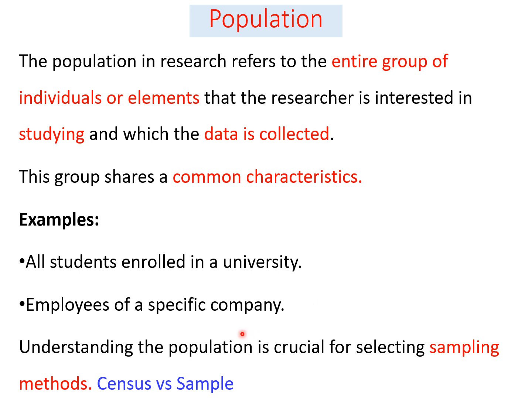In general, understanding the nature of the population is very crucial to make major decisions like selecting the suitable sampling method, so as to minimize bias and increase representativeness. To choose a suitable sampling method, we have to understand the nature of the population.